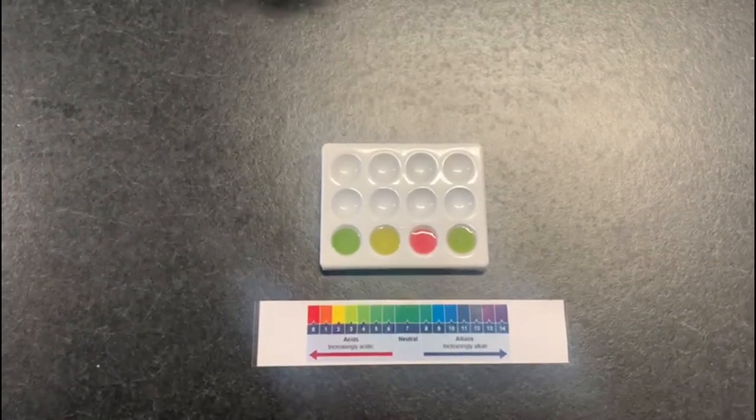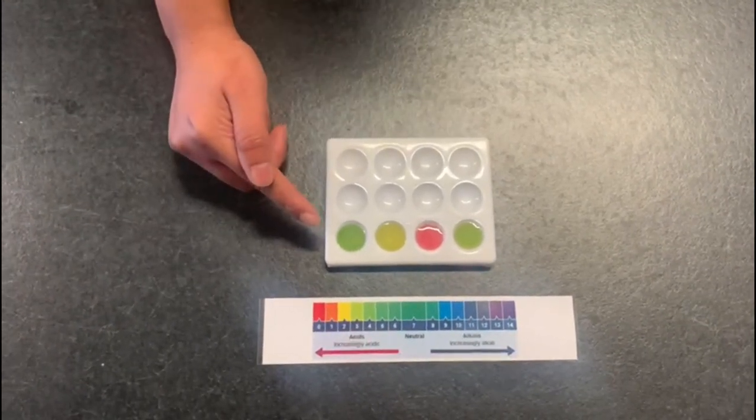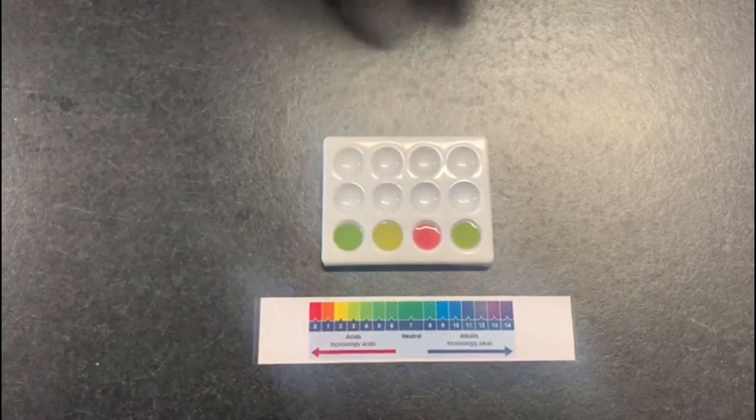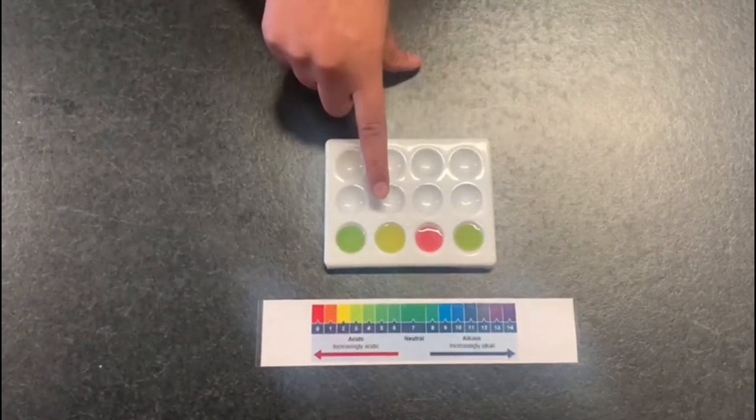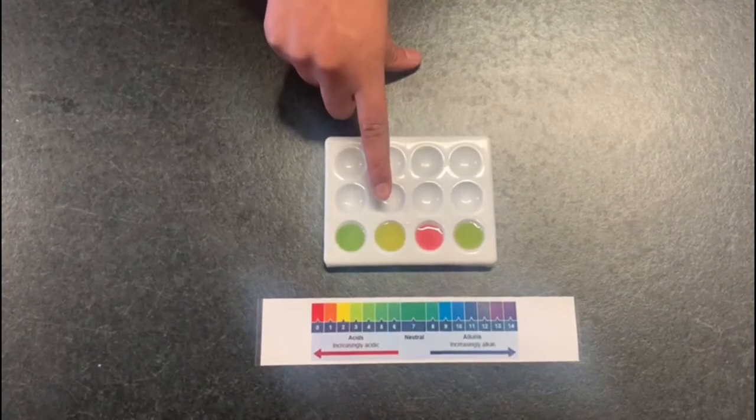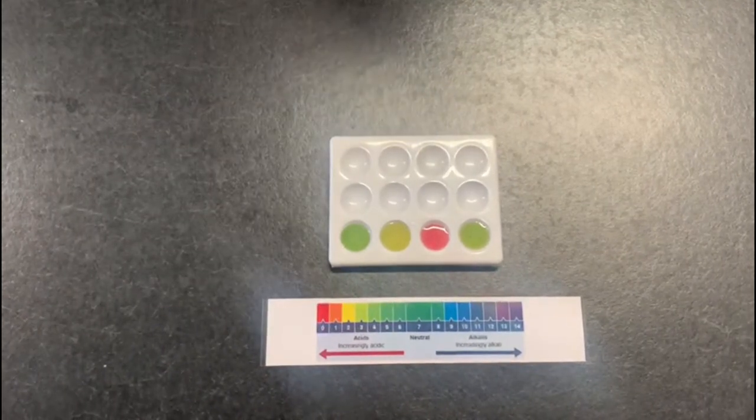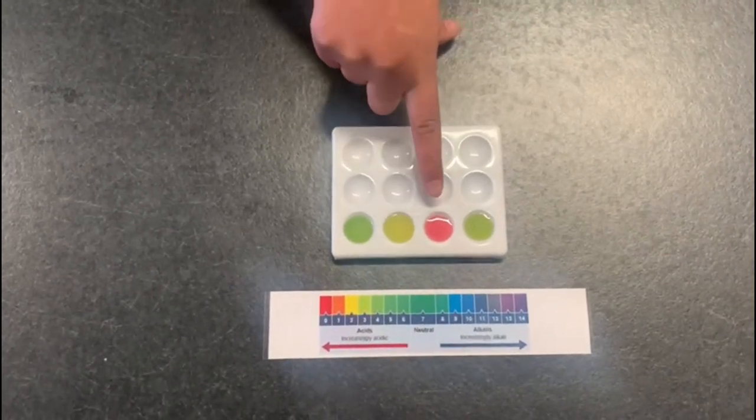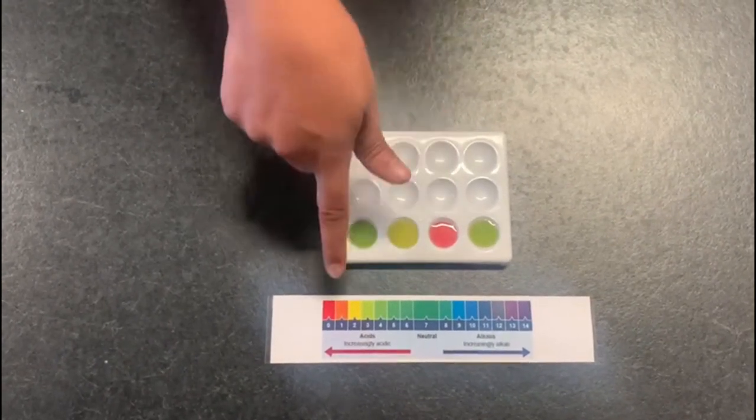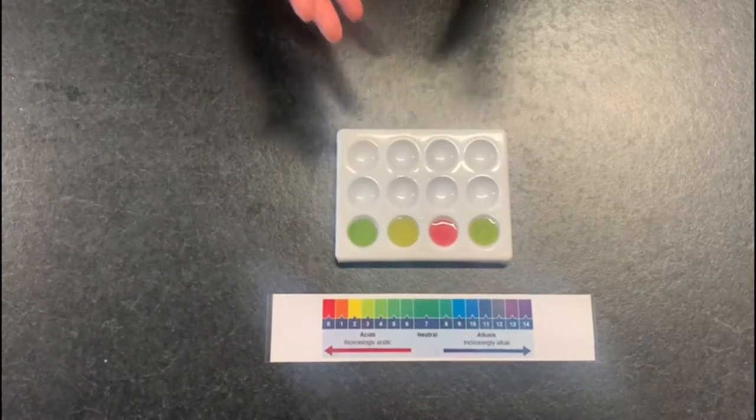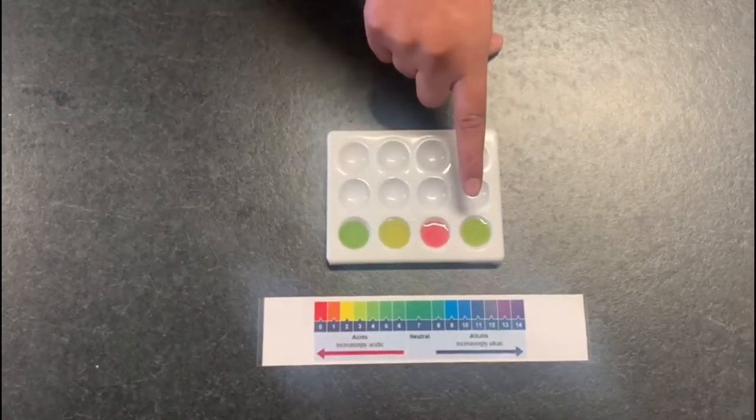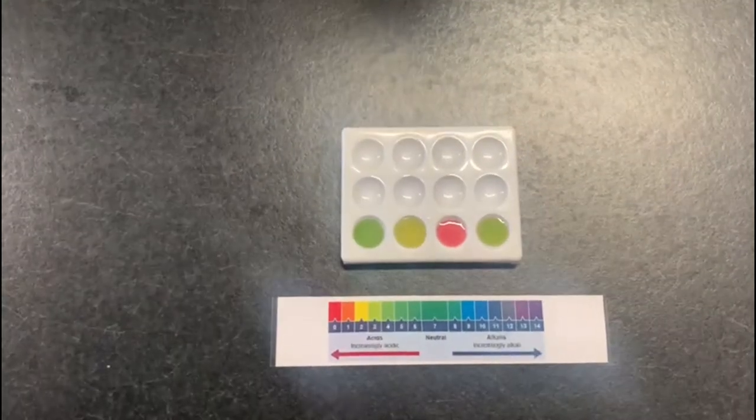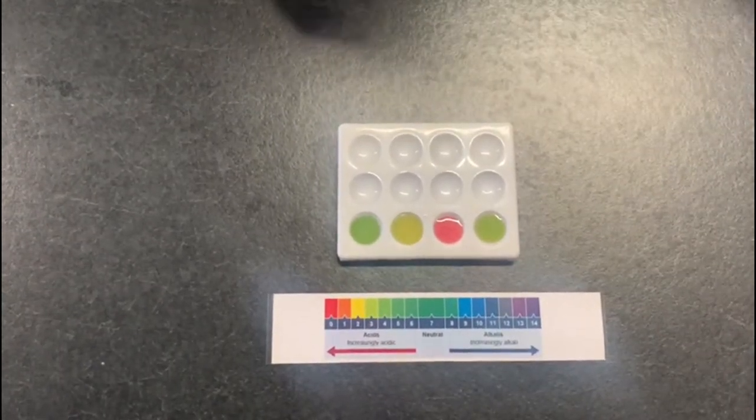I'm going to talk you through the results. Over here we have the seawater which matches up with pH 5 which is a weak acid. Then we have spring water which matches up with pH 3 which is a stronger acid. We have rain water over here which matches up with pH 0 which is the strongest acid. And lastly we have distilled water which matches up with pH 4 which is also a weak acid.